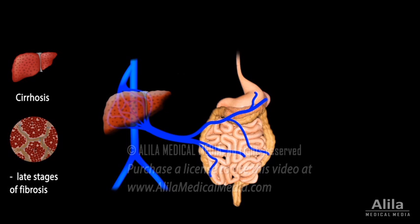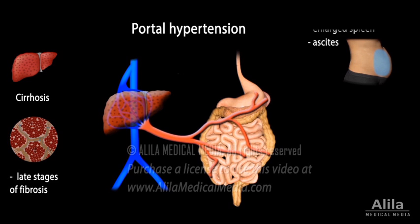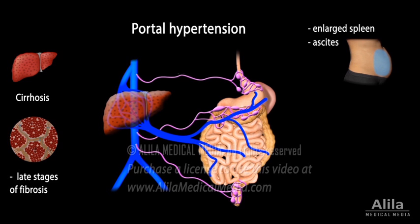In the advanced stage, widespread scarring of liver tissues may lead to decreased blood flow within the liver, causing high blood pressure in the hepatic portal vein that carries blood to the liver. This condition is known as portal hypertension. Portal hypertension may cause abdominal distention, enlarged spleen, and formation of new blood vessels as alternative routes for blood to bypass the liver. Under high pressure, these small vessels can become engorged and form varices, which may rupture and bleed.